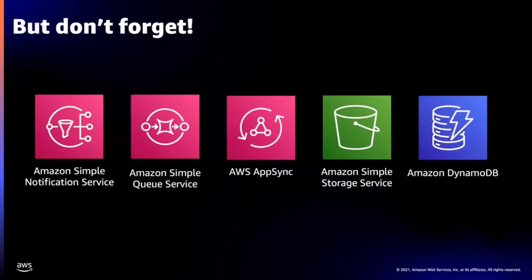Don't forget there are other services we won't have time to touch on today. Amazon SNS is a serverless PubSub service for fanning out messages to subscribers. SQS is a serverless queuing service for decoupling and scaling microservices. AppSync is a fully managed service for building GraphQL APIs. S3 is an object storage service that integrates nicely with Lambda. And DynamoDB is a fully managed NoSQL database great for massive scale.